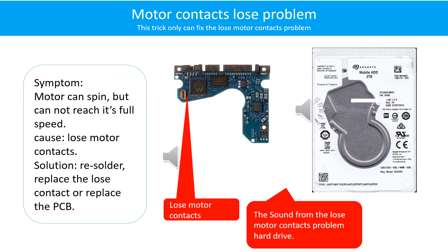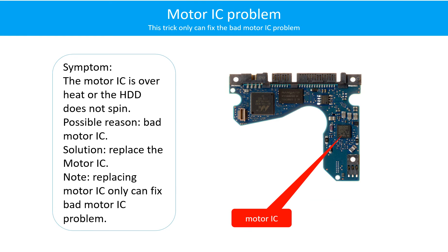Motor contacts loose problem. Symptom: the motor can spin but cannot reach its full speed. Cause: loose motor contacts. Solution: re-solder or replace the loose contacts, or replace the PCB. Here is the sound from a hard drive with a loose motor contacts problem — the motor can spin but cannot reach its full speed.